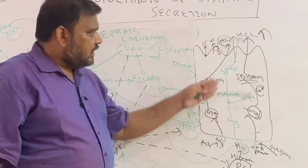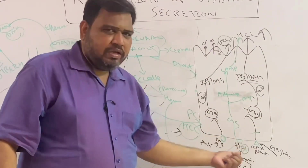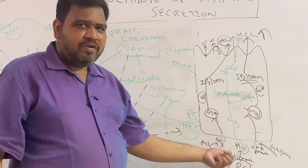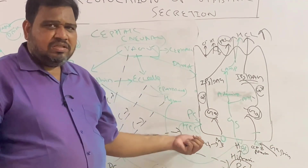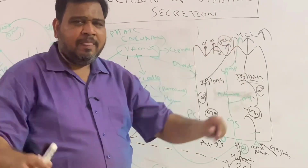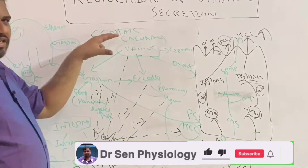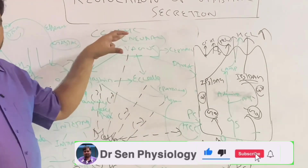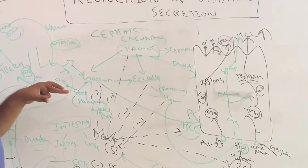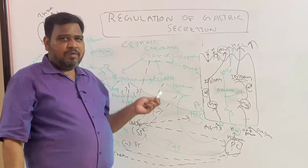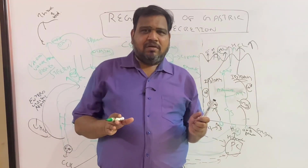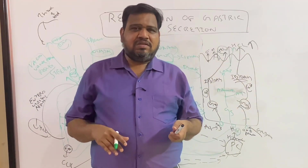To summarize today's class: parietal cells secrete HCl via three receptors — CCKB for gastrin, H2 for histamine, and M3 for acetylcholine. The cephalic phase is purely neural via the vagus. The gastric phase is both neural and hormonal, with vagus controlling gastrin, ECL cells, and parietal cells. The intestinal phase mainly decreases HCl secretion. This completes the topic of regulation of gastric secretion.